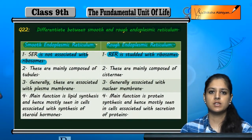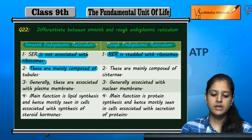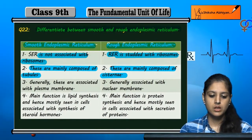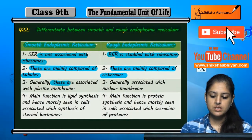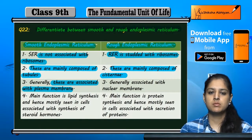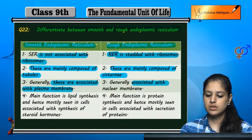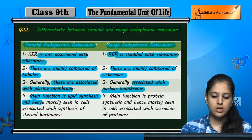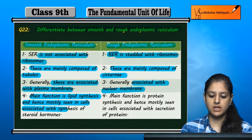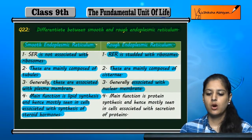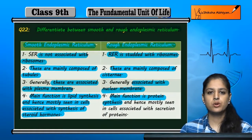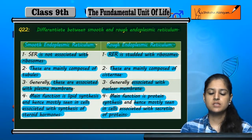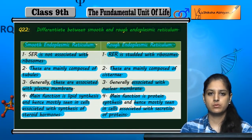The smooth endoplasmic reticulum is made mainly of tubules, while the rough endoplasmic reticulum is mainly composed of cisternae, which are finger-like projections. The smooth ER is generally associated with the plasma membrane, while the rough ER is associated with the nuclear membrane. The main function of the smooth endoplasmic reticulum is lipid synthesis.